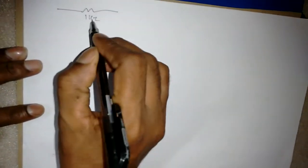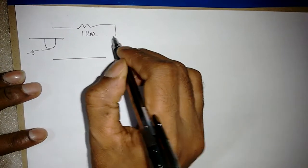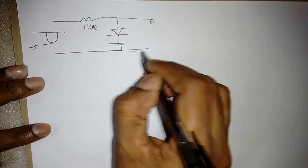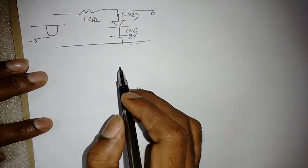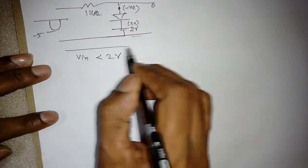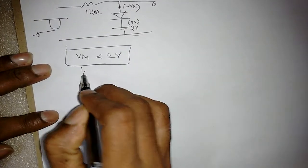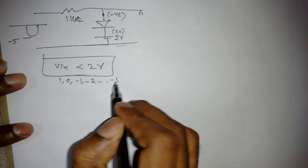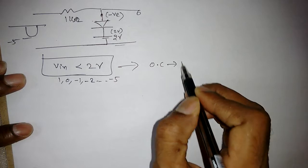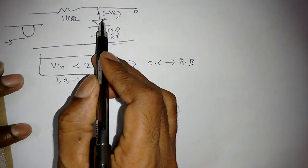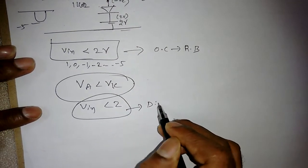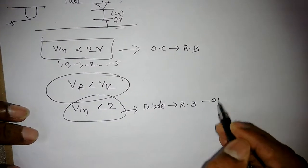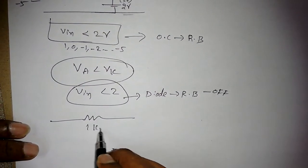Now let's see what happens during the negative half cycle, when we apply minus 5V. VA is now a negative value and VK is 2V (positive). The condition here is that Vin is less than 2V — it could be 1V, 0V, minus 1V, minus 2V, all the way to minus 5V. Since VA is less than VK (anode voltage is less than cathode voltage), the diode is reverse biased and OFF.